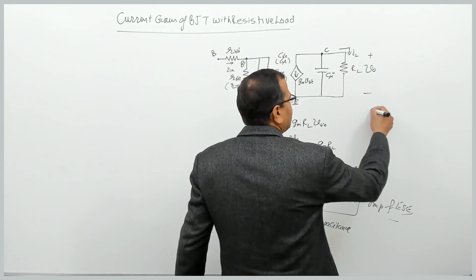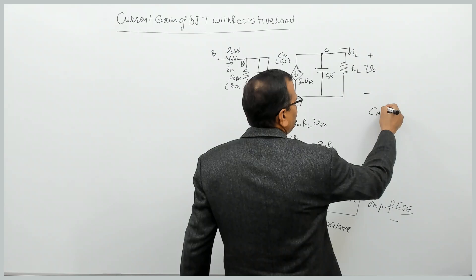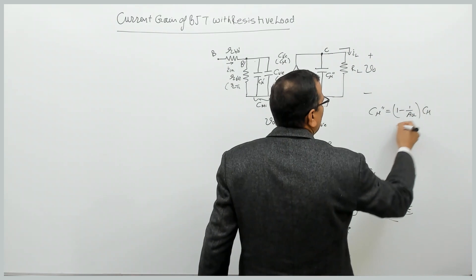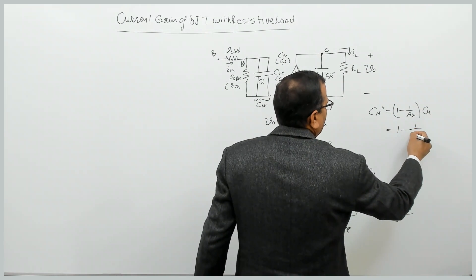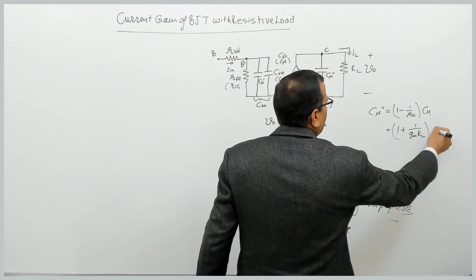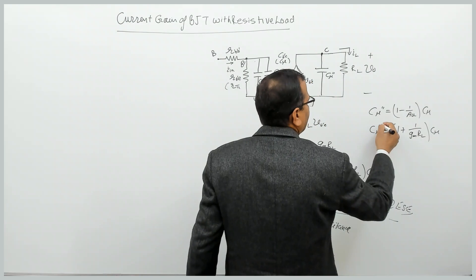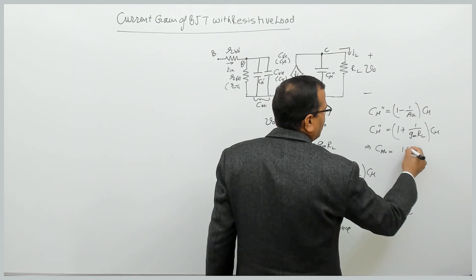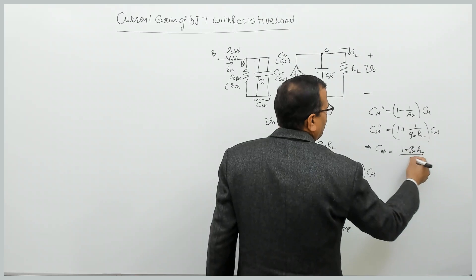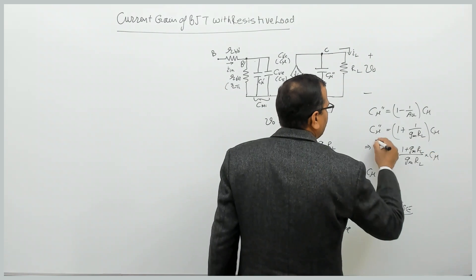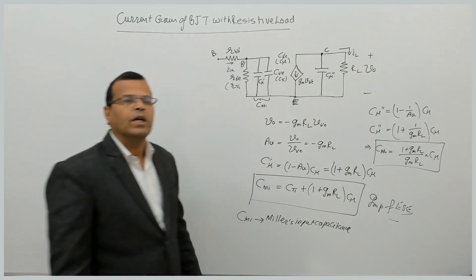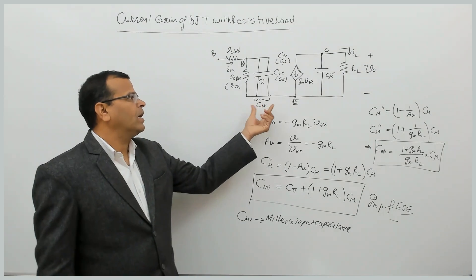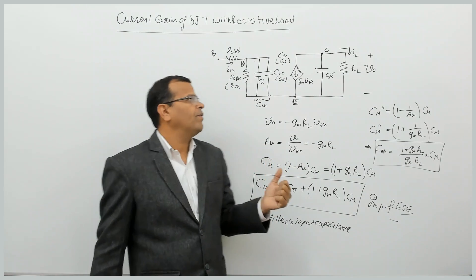Similarly, we have an output capacitance C_mu-double-dash, and that is (1 minus 1/AV) times C_mu, which equals (1 minus 1/(gm times RL)) times C_mu. This simplifies to (1 plus gm times RL)/(gm times RL) times C_mu. This is called Miller's output capacitance. So there are two capacitances in this circuit: Cmi on the input side and Cmo on the output side.